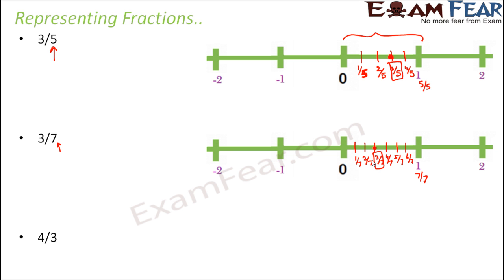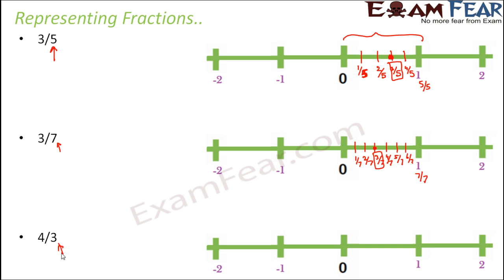Let's take one last example: 4 by 3. The denominator is 3, so we will divide each block into 3 equal parts. So this is 1 by 3, 2 by 3, this is 3 by 3, this is 4 by 3, this is 5 by 3. So 4 by 3 is this point — this is where 4 by 3 is located on the number line.